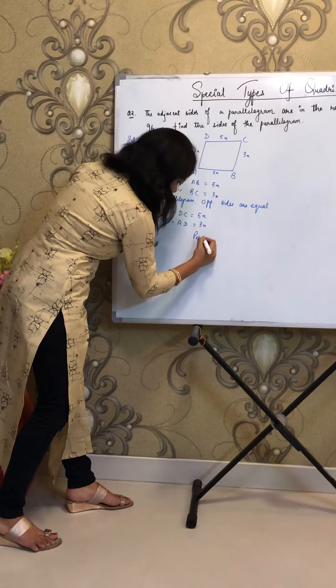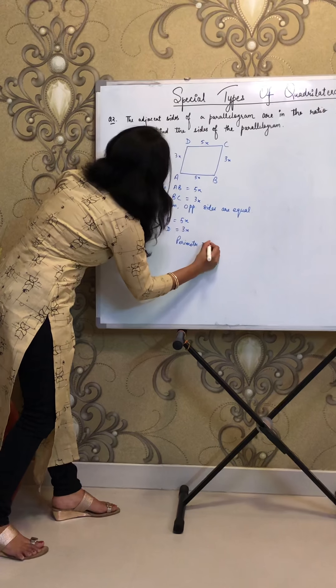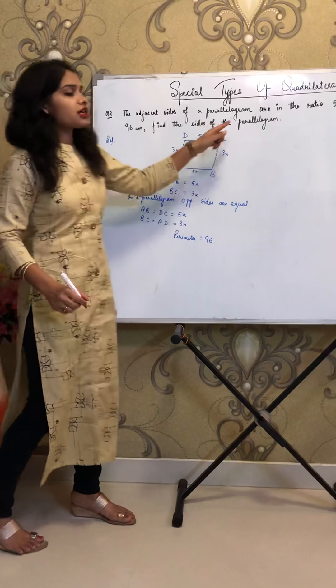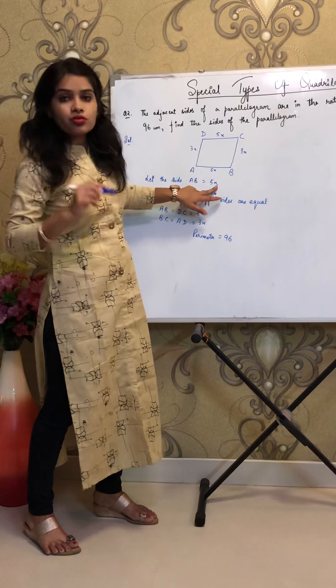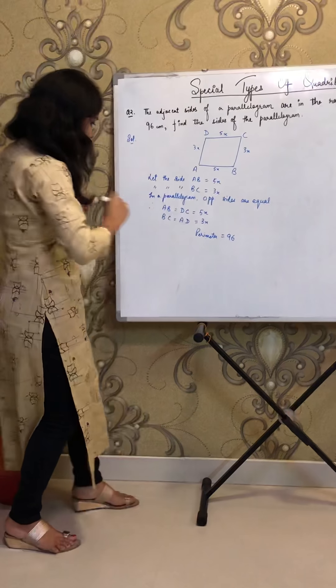So if perimeter is 96, what they are asking? The sides of parallelogram. If I want to find the sides of the parallelogram, I should know X, so I have to find X.